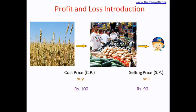What if he had bought the vegetables for 100 rupees but sold them for 90 rupees? Say the vegetables have gone bad — that's why he had to sell at a lower price. The cost price was 100 rupees and the selling price was 90 rupees. In this case, we say the shop owner incurred a loss — he lost money.